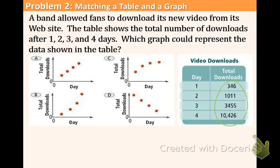346, 1,011, 3,455, and 10,426. Well you can see that it's increasing. So we can immediately get rid of graph D, because graph D is going down and we just talked about that it's going up instead. So D is gone.